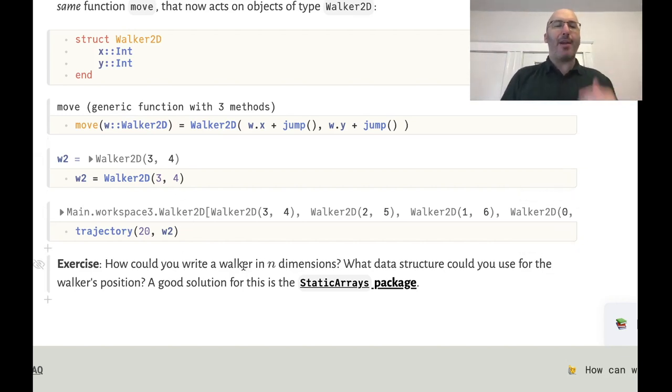So what about a walker in n dimensions? Which data structure would you use for the walker's position? And actually a good solution for this is the static arrays package.